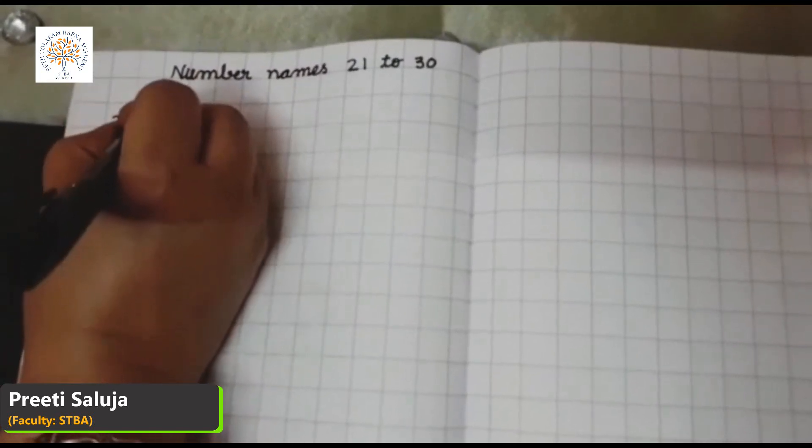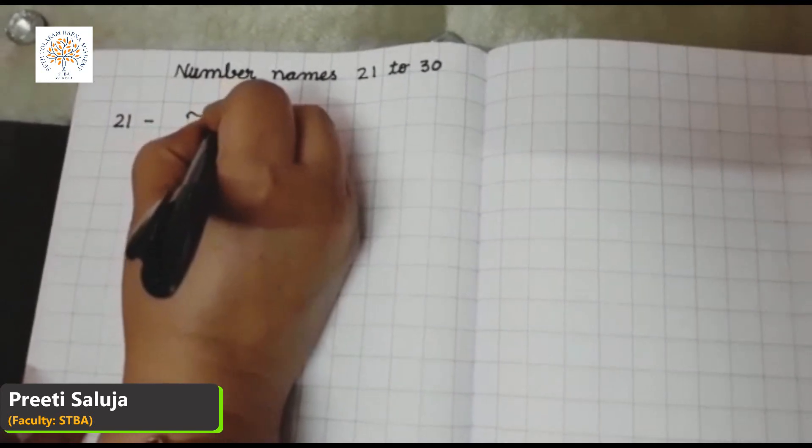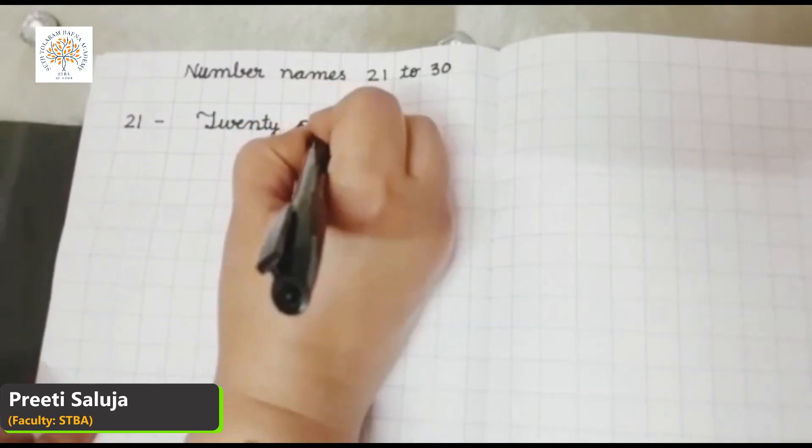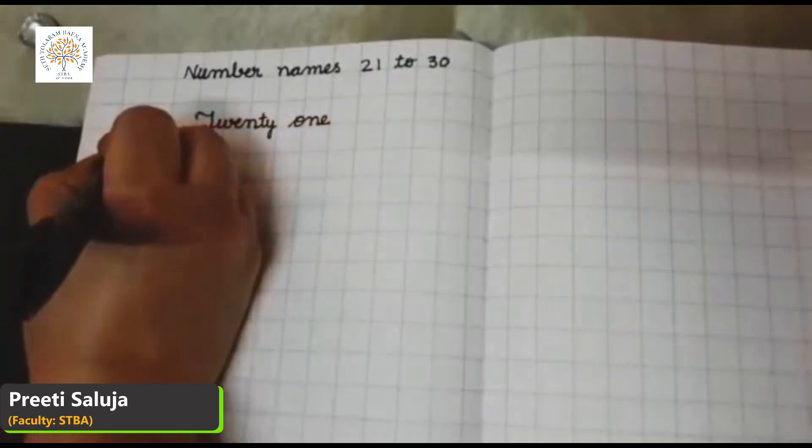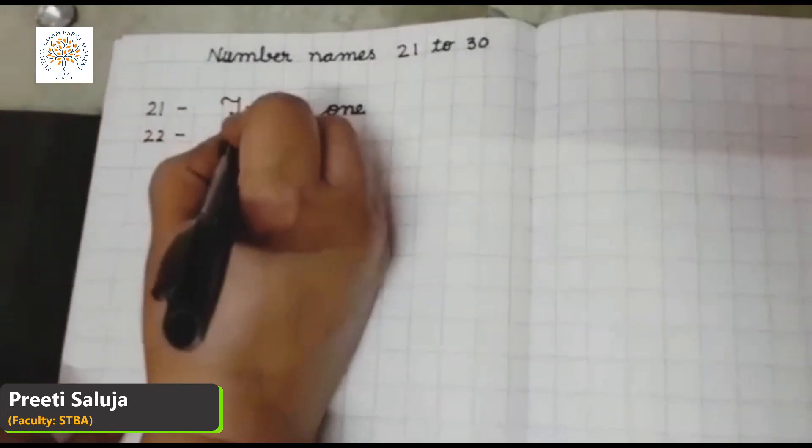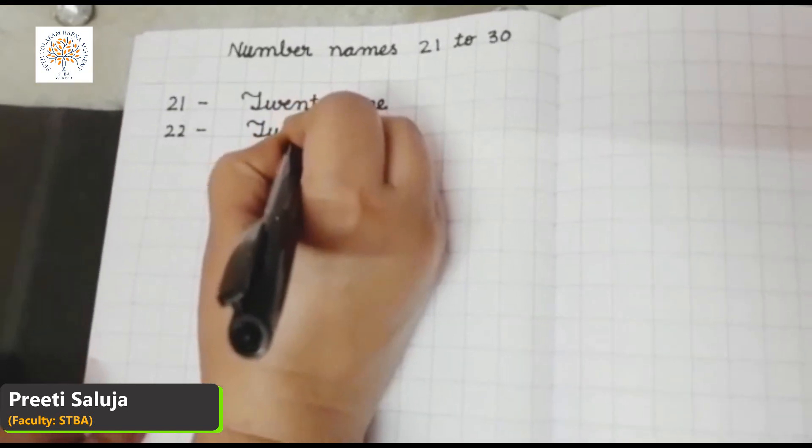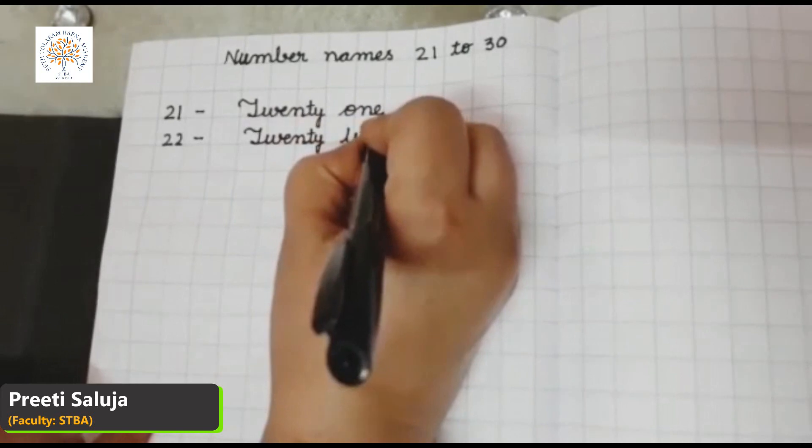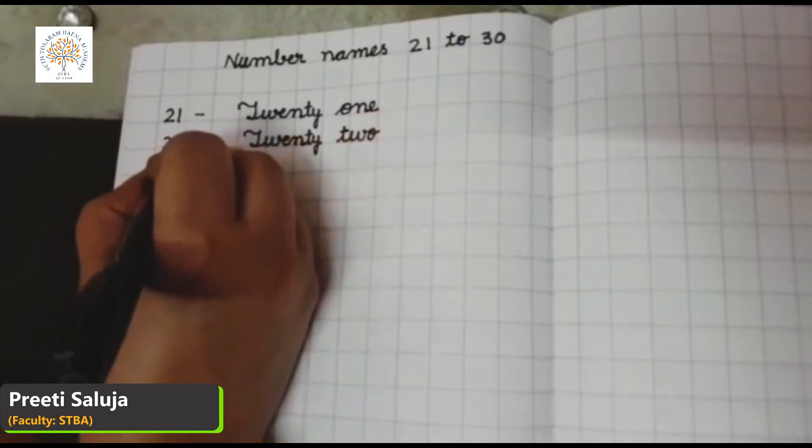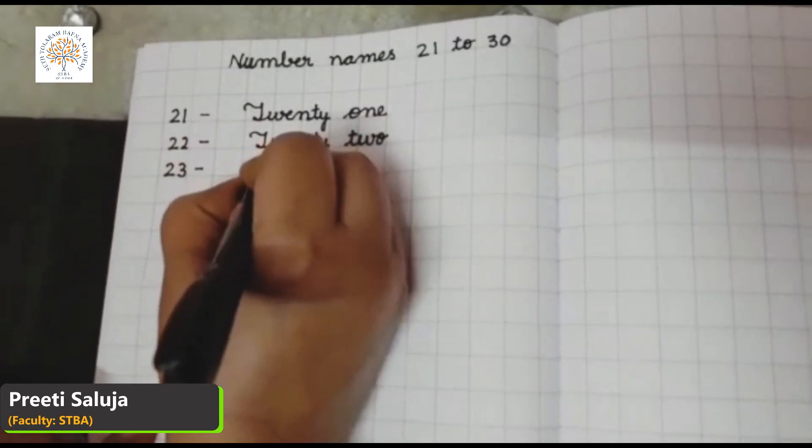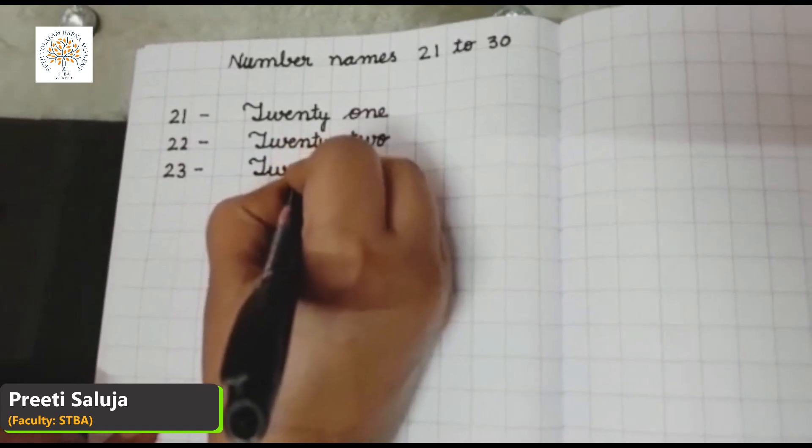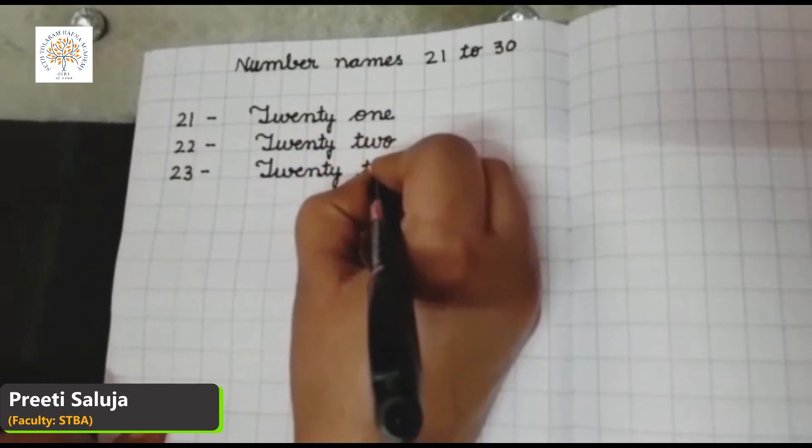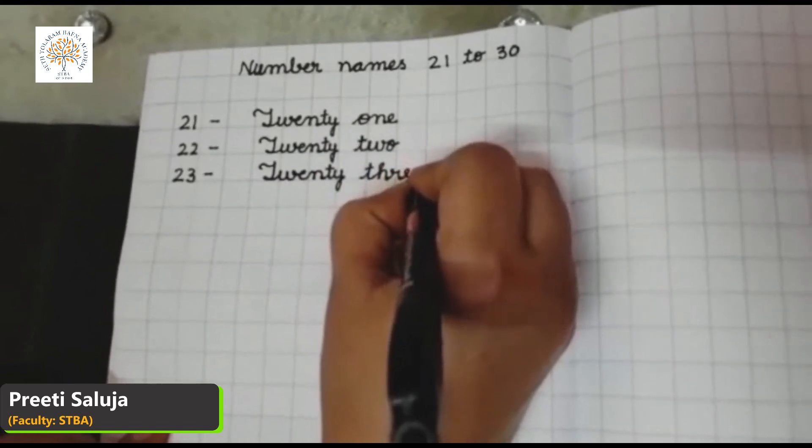21, twenty-one, T-W-E-N-T-Y, 20, O-N-E, 1, 21. 22, twenty-two, T-W-E-N-T-Y, 20, T-W-O, 2, 22. 23, twenty-three, T-W-E-N-T-Y, 20, T-H-R-double E, 23.